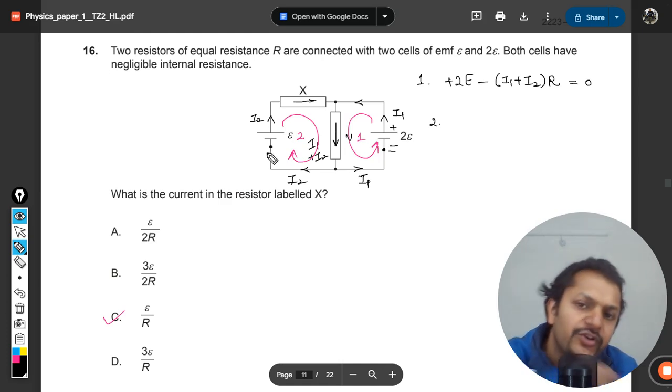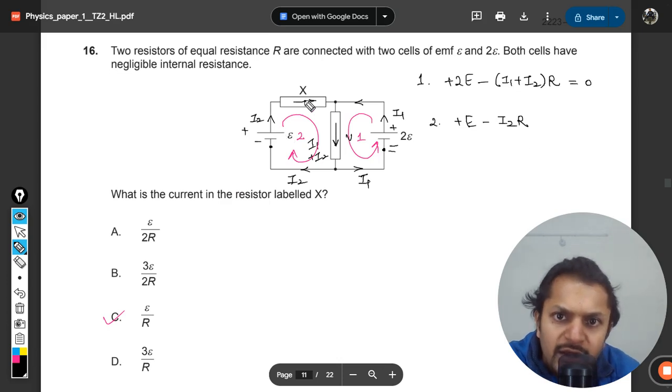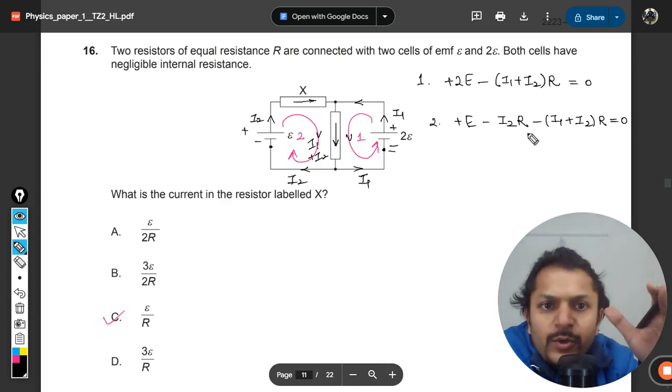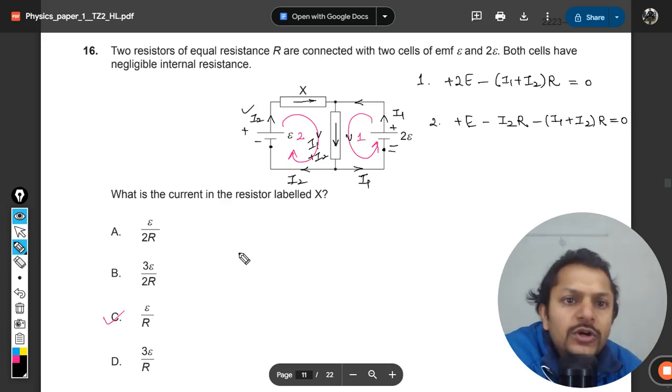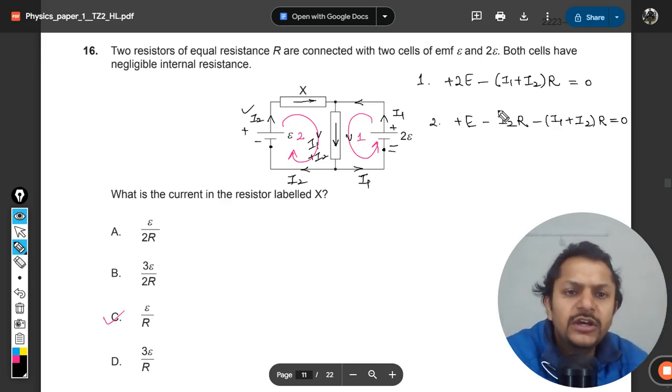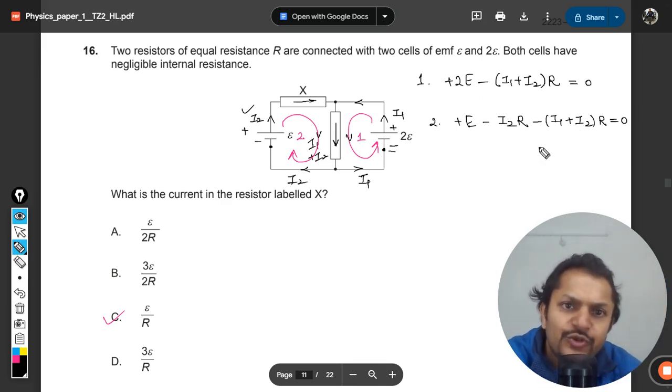Equation number two from this loop: we're starting from the rear end of the battery, the negative terminal first, so we add the battery e. Then it goes through this, giving negative i2 times r. Then it goes through this, again the direction is the same, and we reach the same point equal to zero. Now we subtract these two equations to solve for i2. 2e minus e gives e.